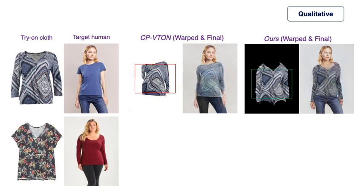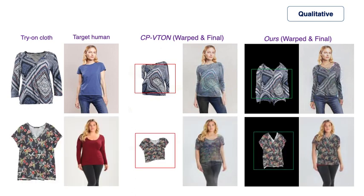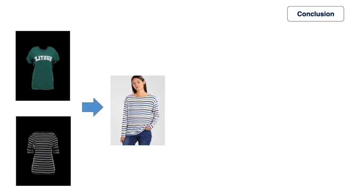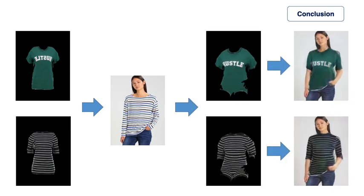Our method works best when the 3D pose and shape of the target human are estimated correctly. Currently, our method only works for tightly fitted clothes. Further work is needed to include loose-fitted clothes such as coats and skirts.